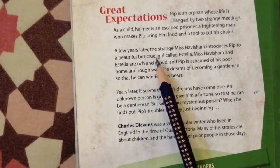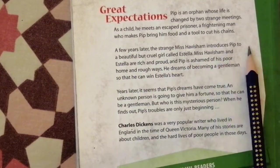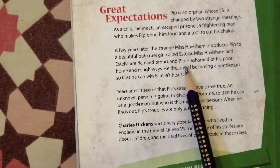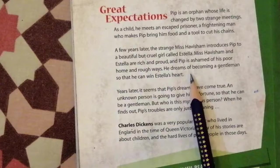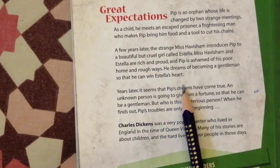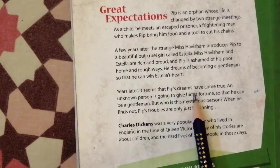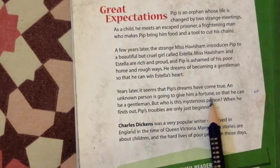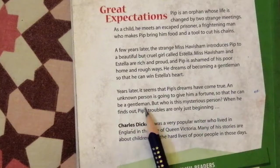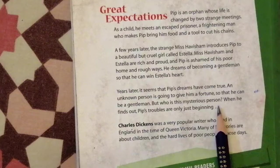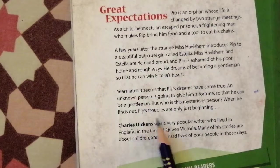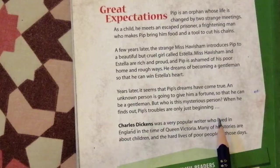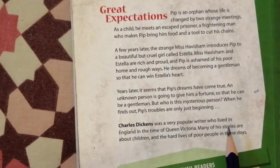A few years later, the strange Miss Havisham introduces Pip to a beautiful but cruel girl called Estella. Miss Havisham and Estella are rich and proud, and Pip is ashamed of his poor home and rough ways. He dreams of becoming a gentleman so he can win Estella's heart. Years later it seems Pip's dreams have come true — an unknown person is going to give him a fortune, so much money that he can become a gentleman. But who is this mysterious person? When he finds out, Pip's troubles are only just beginning.